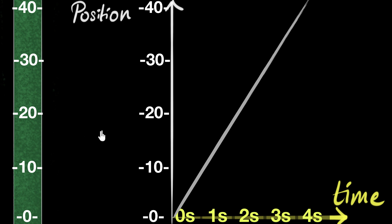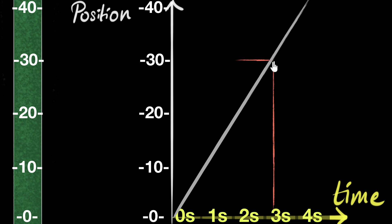Just to be clear — for example, if I want to know where the rabbit is at three seconds, then all I will do is come to three seconds, go up, and the rabbit is at that point. But where is that? I'll go to the left and read off: it's at 30 meters. So the rabbit is at 30 meters.